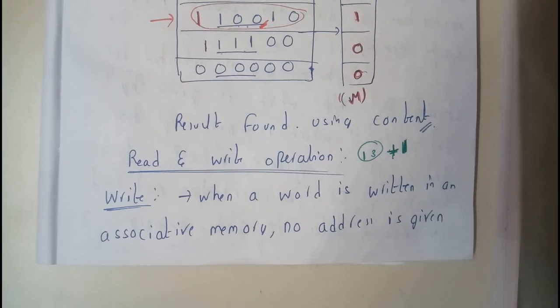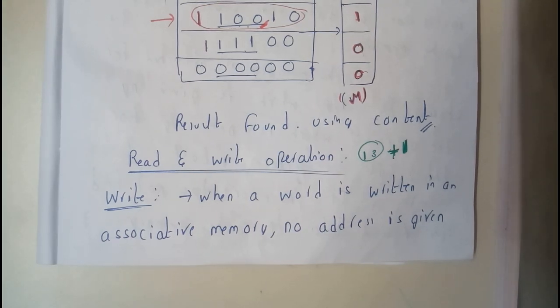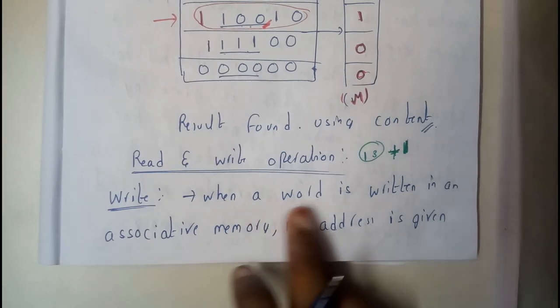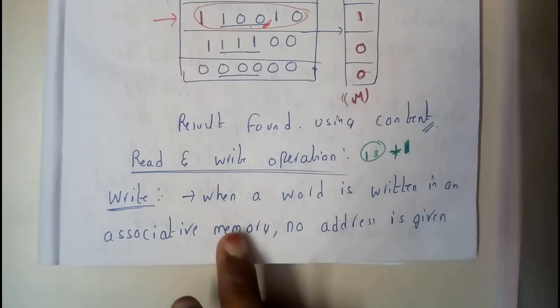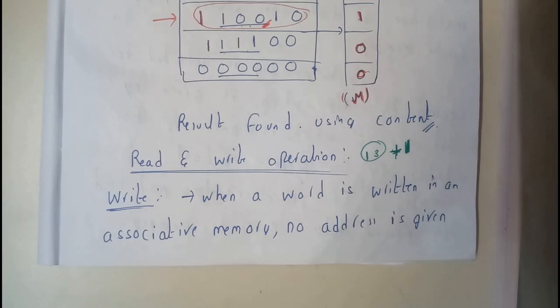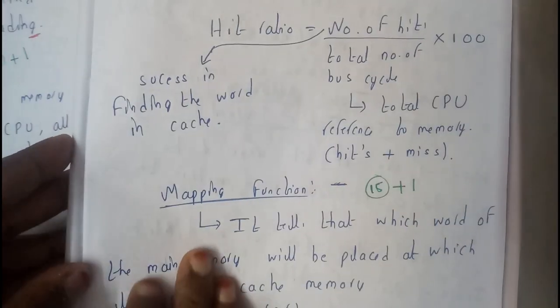Hello guys, we are back with our next tutorial. In this tutorial let us go through read and write operations on associative memory. So let us first go through write operations. When a word is written in associative memory, we need not specify any address or memory location — it stores at places where there is no memory, or where there is free space.